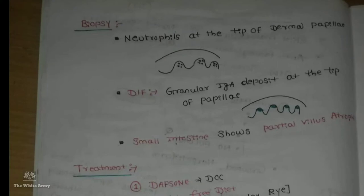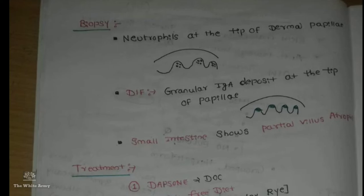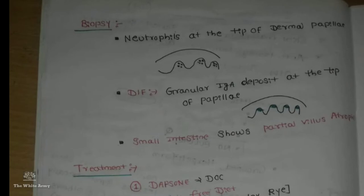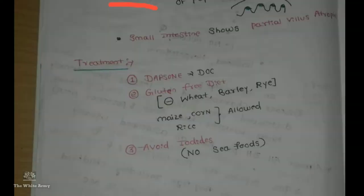The biopsy will show neutrophils at the tip of the dermal papillae. Direct immunofluorescence shows granular IgA deposits at the tip of the papillae. The linear IgA deposit is seen in linear IgA disease, which is a variant of bullous pemphigoid. The small intestine will show partial villus atrophy.